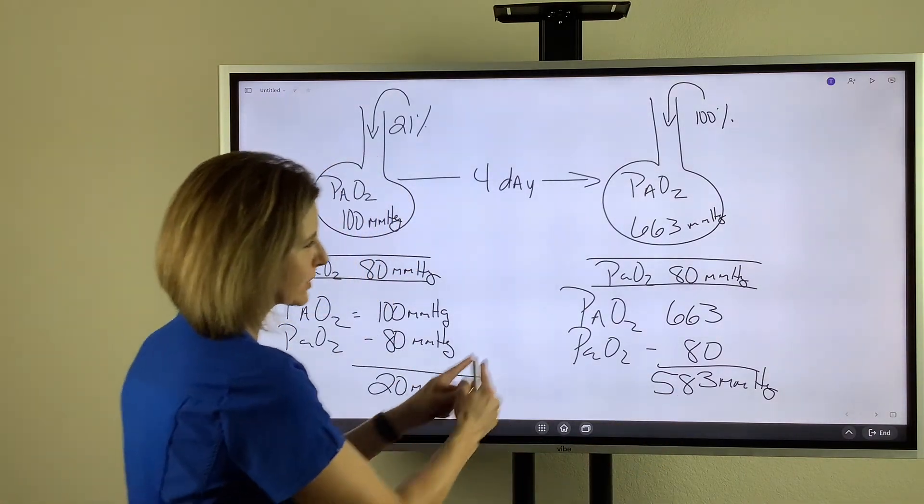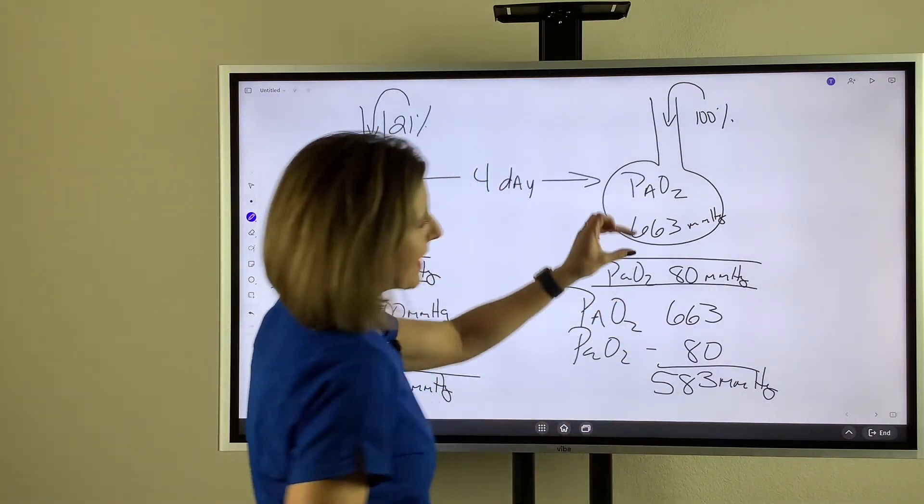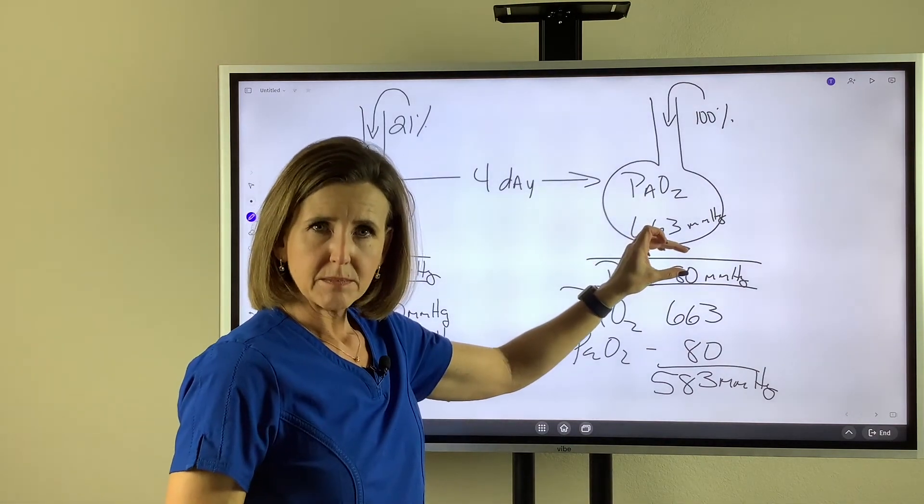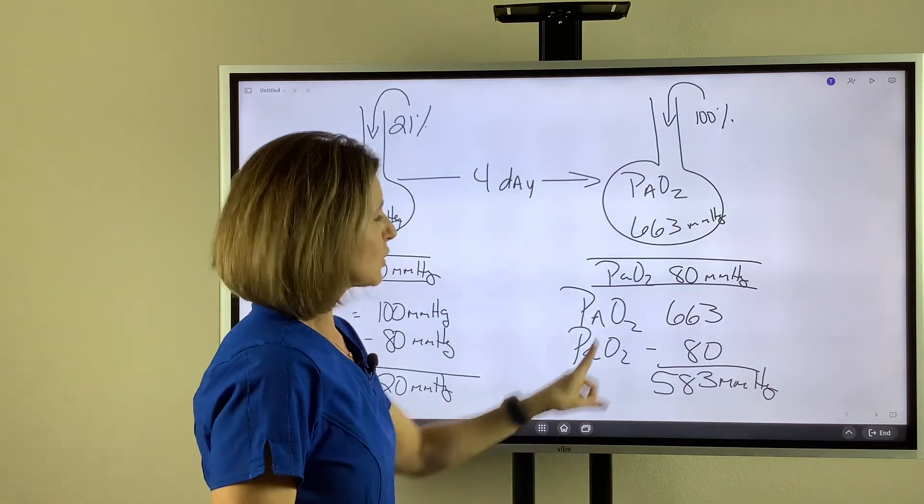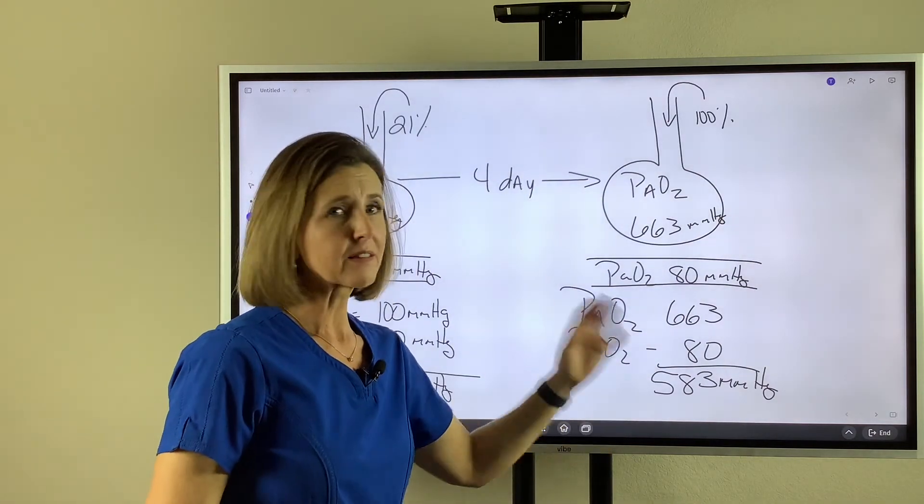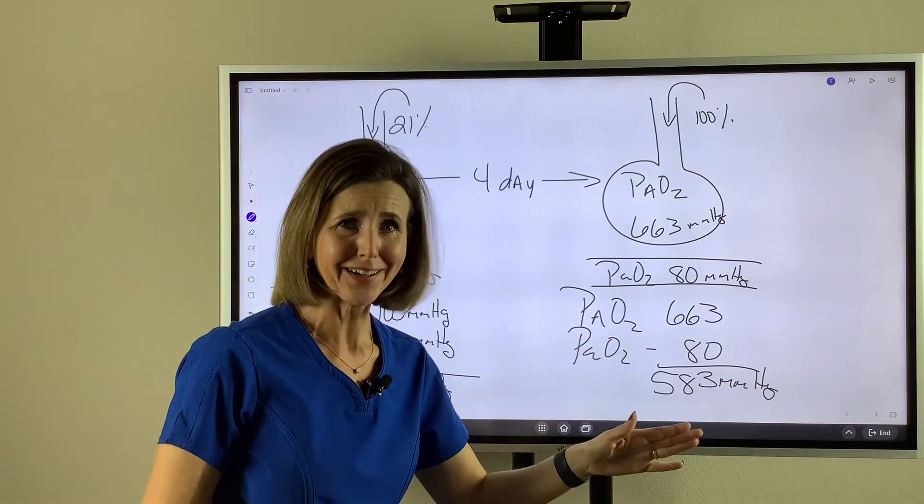When the A-a difference is increasing, that means something's wrong at the AC membrane - oxygen is not able to diffuse across it. A big A-a difference means the lungs are sick.